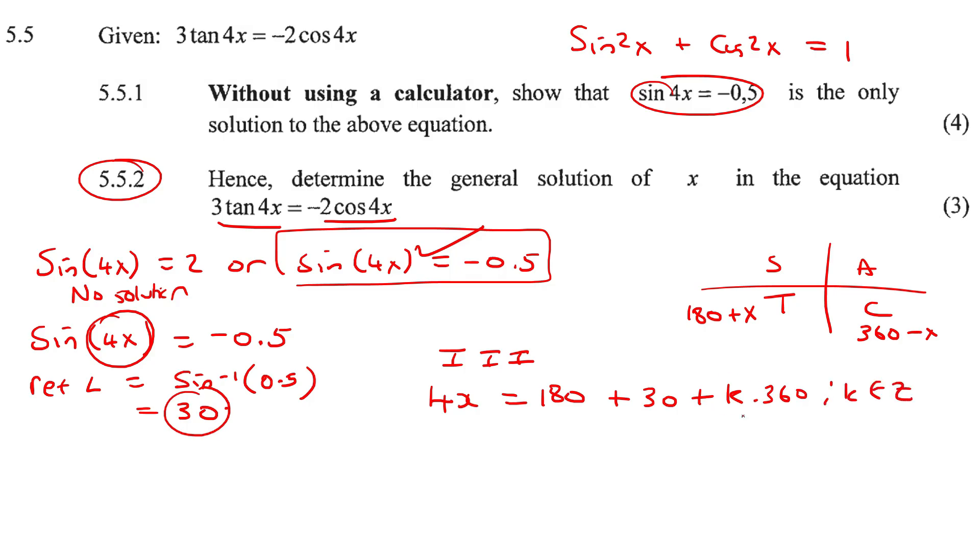Plus k times 360, k is an element of z. If you use n instead, not a problem. So 4x will equal to 210 plus k times 360, k element of z. And then 4x, if you divide everything by four, you would end up with, what would that be? 52.5 plus k times 90, k element of z.